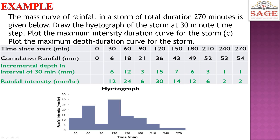Now an example: the mass curve of rainfall in a storm of total duration 270 minutes is given. We need to draw the hyetograph of the storm at 30-minute time intervals, plot the maximum intensity-duration curve, and plot the maximum depth-duration curve. The data given is cumulative rainfall starting from time 0 to 270 minutes. We calculate incremental depth in intervals of 30 minutes by subtracting consecutive values — for example, 18 minus 6 gives 12, and 6 minus 0 gives 6.